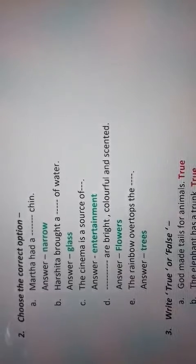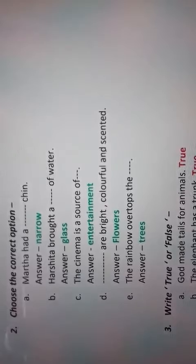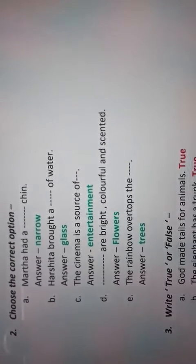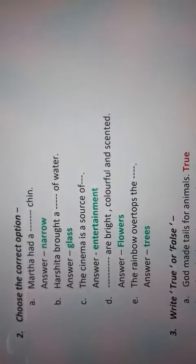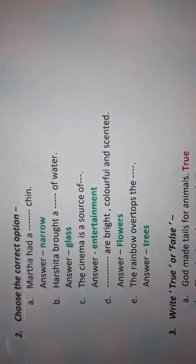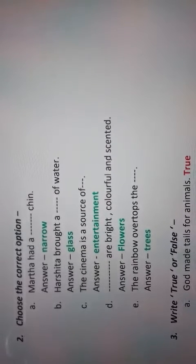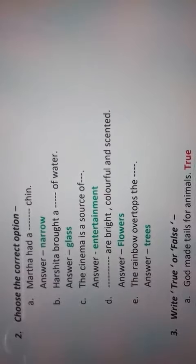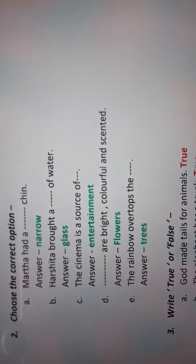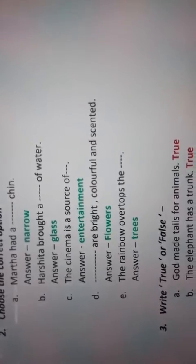The cinema is a source of dash. Answer: entertainment. The cinema is a source of entertainment. Dash are bright, colorful, and scented. Answer: flowers. Flowers are bright, colorful, and scented. The rainbow overtops the dash. Answer: trees. The rainbow overtops the trees.